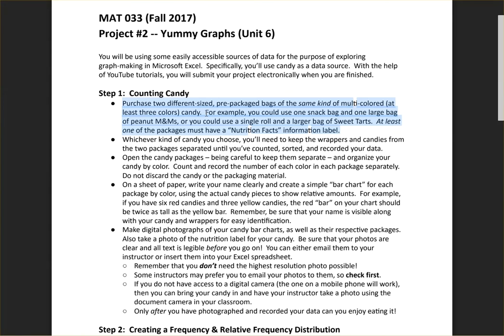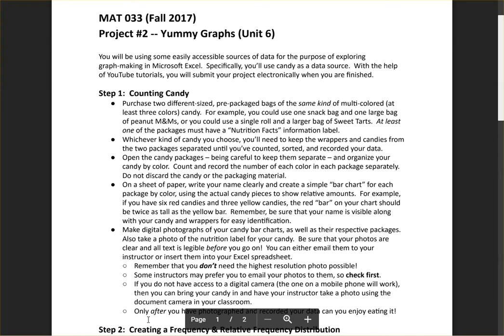I know some people don't like buying candy. I'm not a big candy eater myself, but if you want to do the project, you can always give away the candy to somebody who might enjoy it. For example, you could buy two bags of peanut M&Ms, one smaller and one larger, but you'll notice at the end of this bullet, it says at least one of the packages needs to have a nutrition facts information label. Whatever kind of candy you choose, you'll need the wrappers and the candy from the two packages separated until you've counted, sorted, and recorded your data. When you open your packages, I would recommend opening them on a clean sheet of paper just so that you can keep track of all the different pieces.